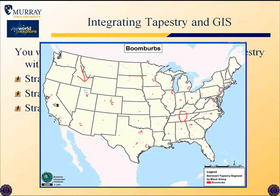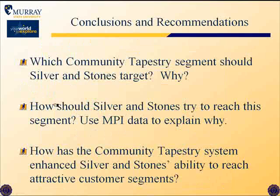This helps anticipate where to find customers who match the chosen segment. By way of conclusions and recommendations, here are the decisions you'll be making: First, which Community Tapestry segment should Silver and Stones target and why? — select from one of the three strategies and identify that group. Second, how should Silver and Stones try to reach this segment, using the MPI data to explain why? — looking at indices for the selected target segment, matching their media characteristics and lifestyle to the marketing campaign. Finally, answer how the Community Tapestry system has enhanced this firm's ability to reach its attractive customers.